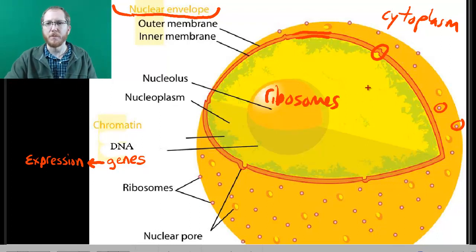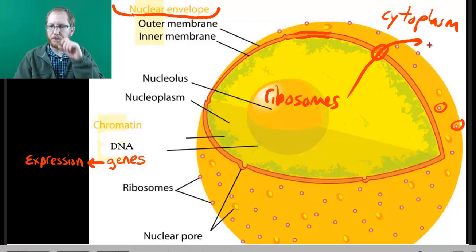And then these ribosomes are able to leave via these nuclear pores to get into the cytoplasm where they do their job. We're going to also have DNA. So you can see here, there's these arrows to all the DNA that's kind of in this nucleoplasm.